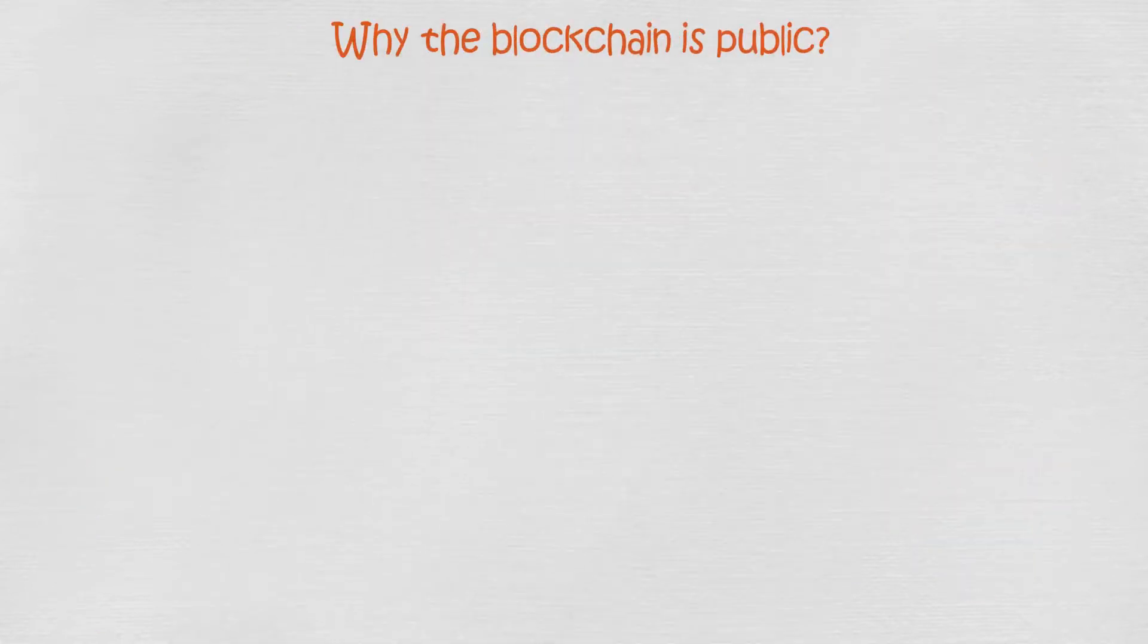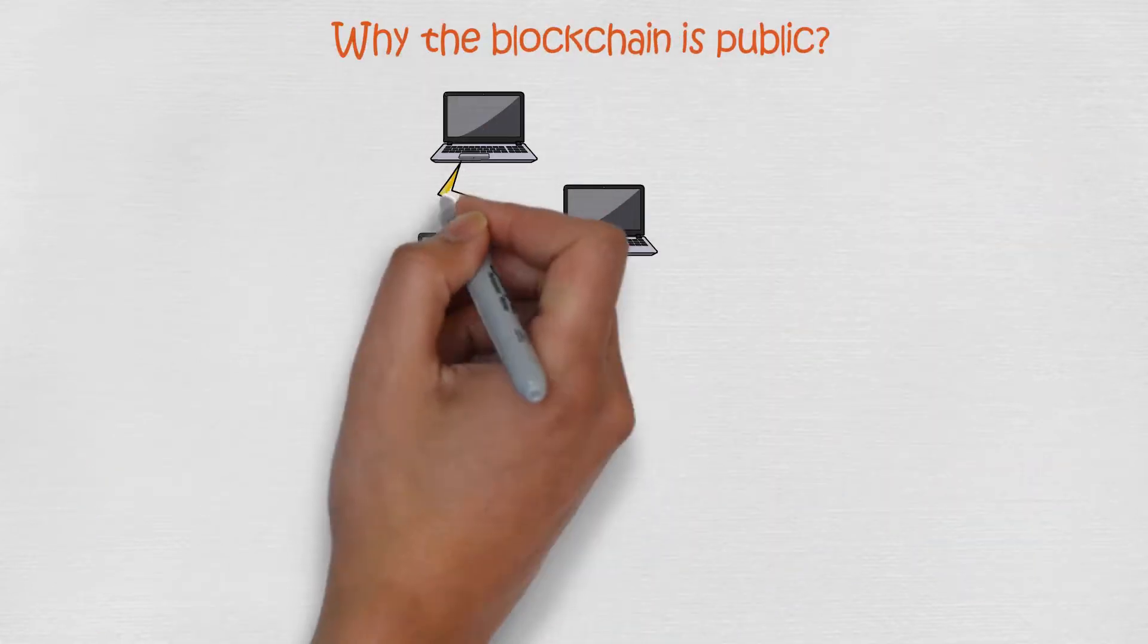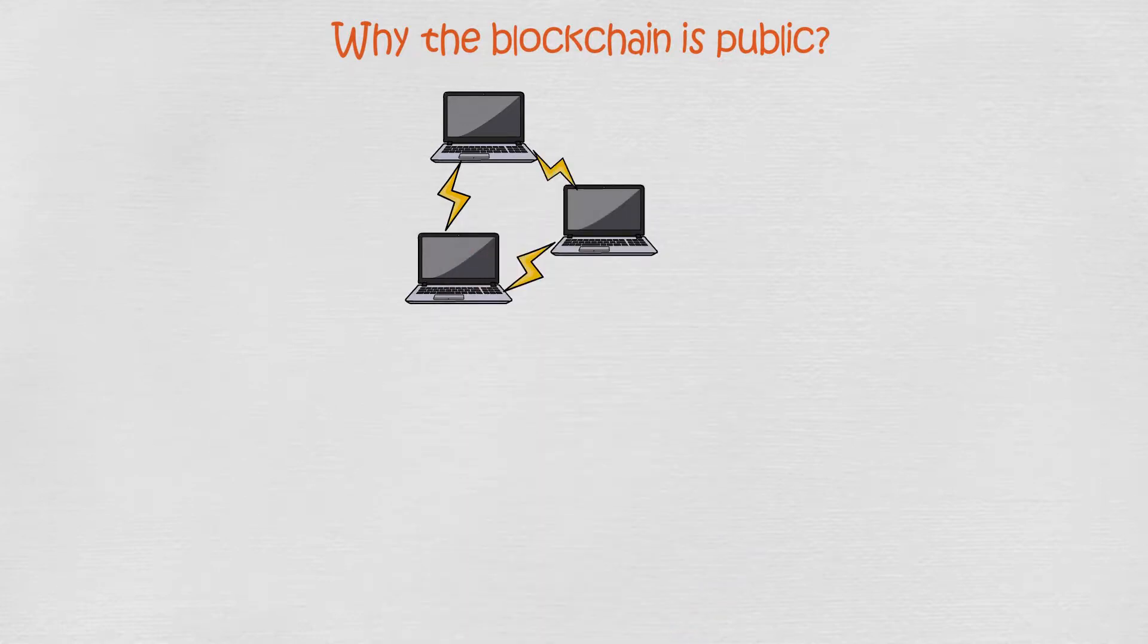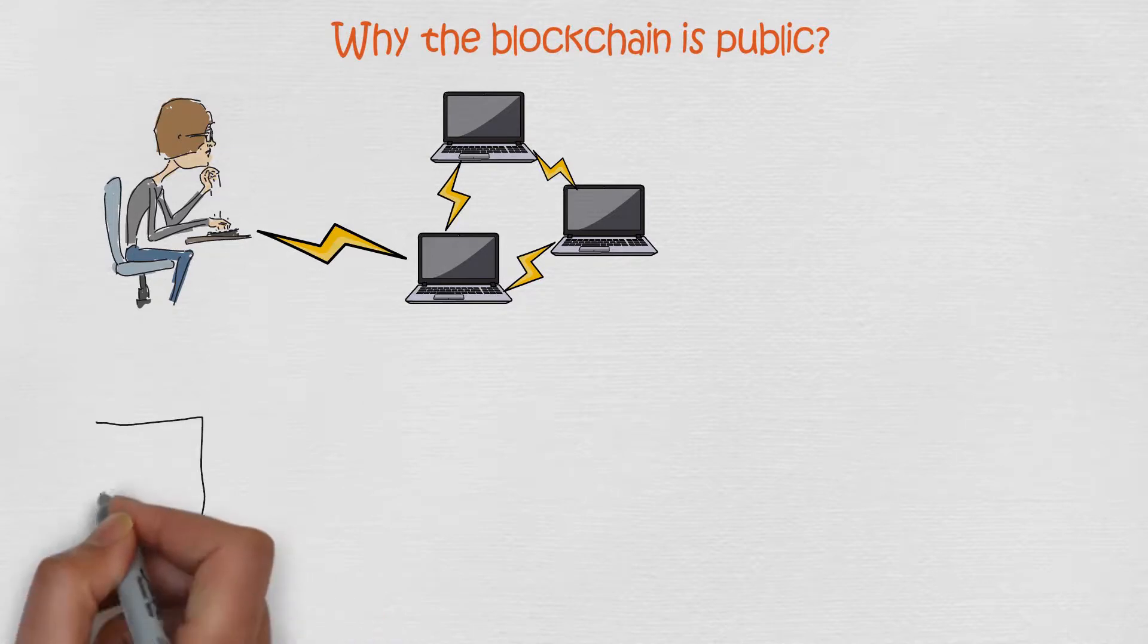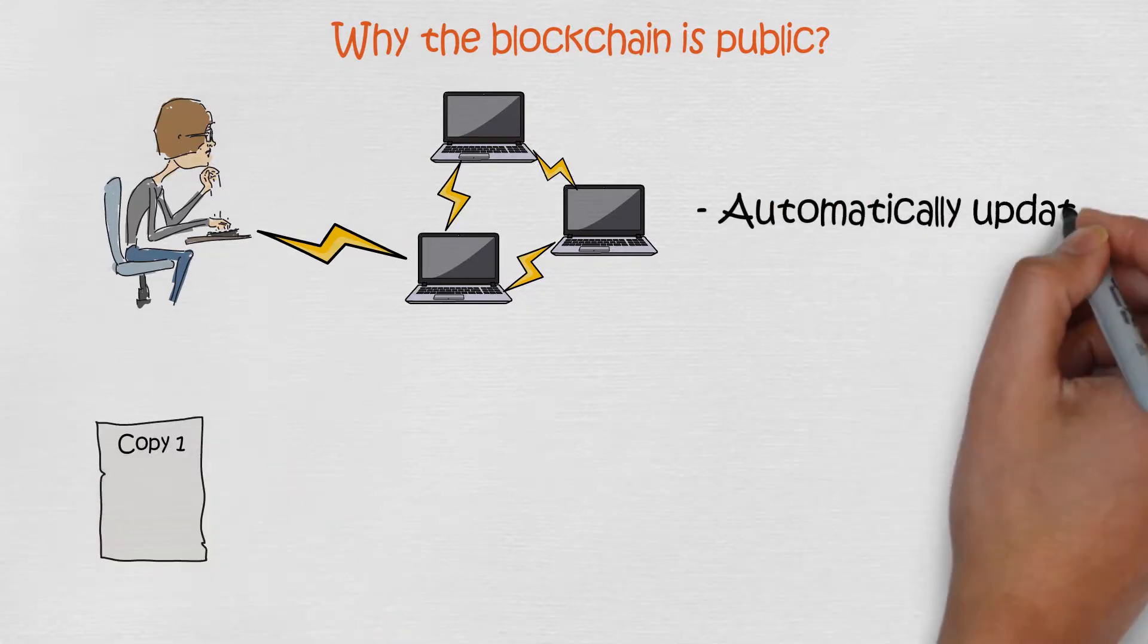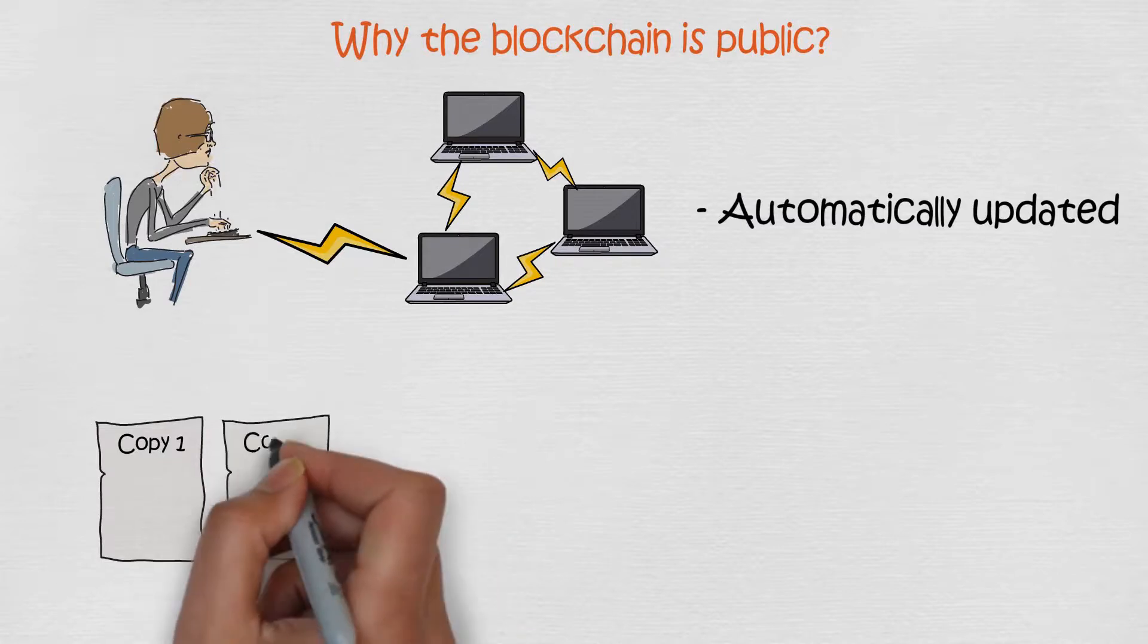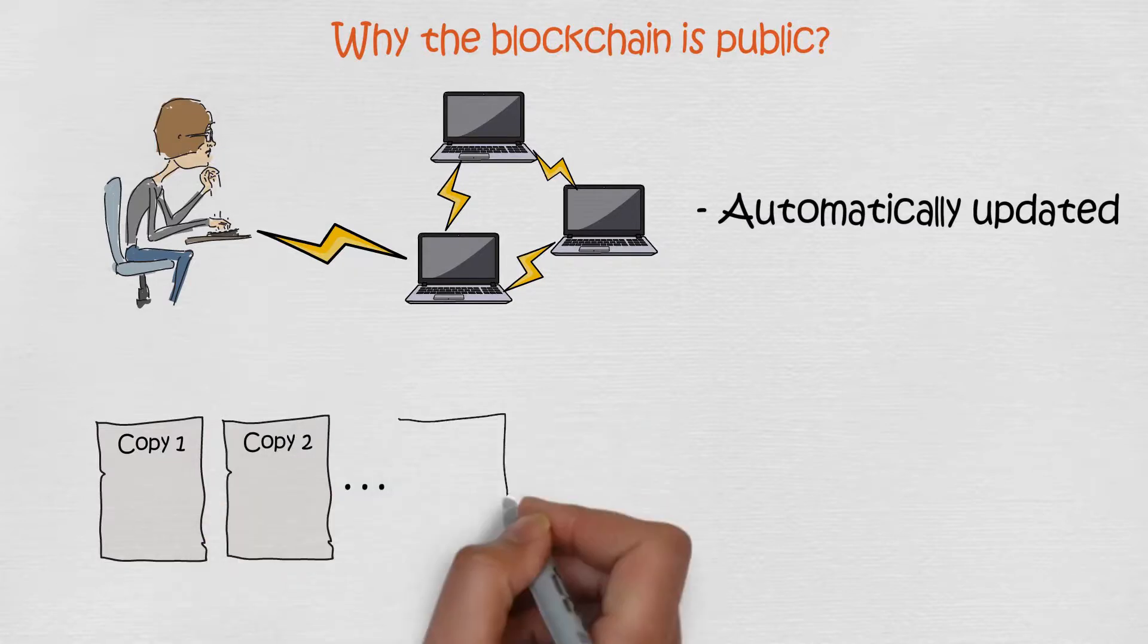Let's take a closer look on why the blockchain is public. Everybody can connect their computer to the blockchain network. This gives their computer a copy of the blockchain. The blockchain gets automatically updated every time a new block is added. Because everybody can connect their computer, it means that there are thousands or even million copies of the blockchain.